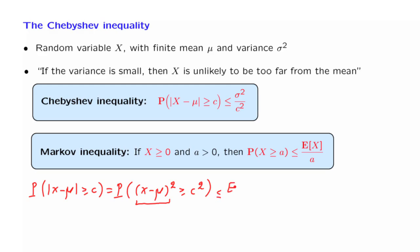So this gives us the expected value of the random variable of interest divided by C squared. But we recognize that the numerator is just the variance, and this is the Chebyshev inequality that we claimed.